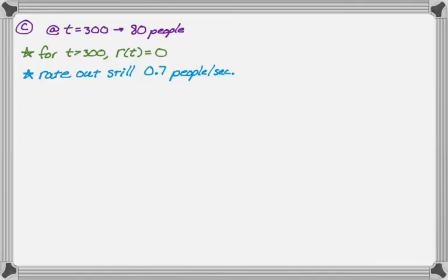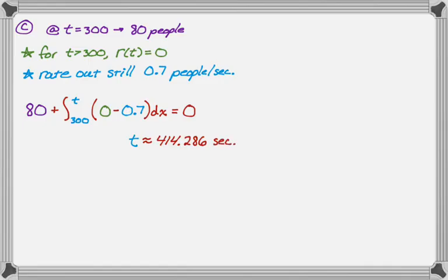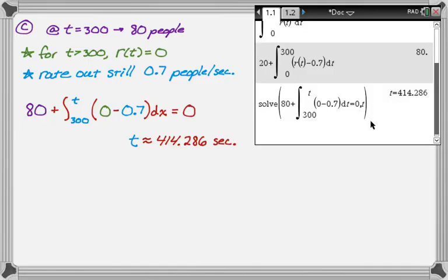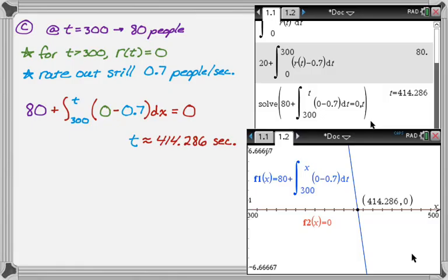So what we want to do now is think about we have the number we're starting with at 300, plus the integral from 300 to whatever T is, we're trying to find T, of rate-in minus rate-out. But the rate-in changed to 0, and then minus the rate-out is still 0.7, and I'm going to say DX here, so it's DX because T is the upper bound, so I don't want the bounds to be dependent. And then that's going to have to equal 0 if there's nobody on line, and the calculator tells me that T is approximately 414.286, and that should be in seconds. Here are some screenshots of what I did on the calculator. First I just solved that, and the TI-Nspire CAS had no problem with that, but if you have a problem with that, you might instead just graph it, graph 0, and then find the intersection point. So either of those methods will definitely work for you.